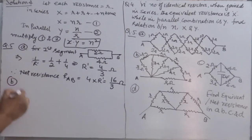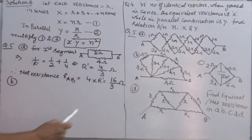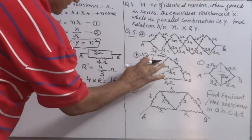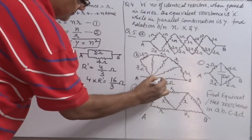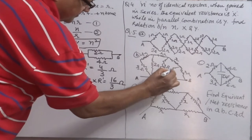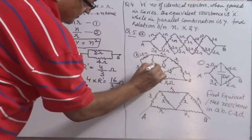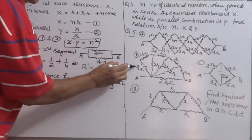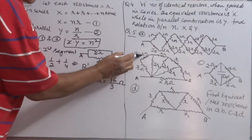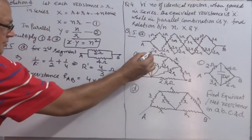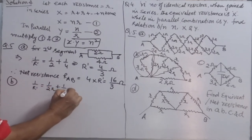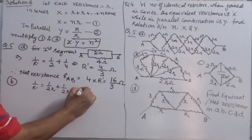Question number five, part B — also a very interesting competitive examination question. We have R, R, and R in series, and that combination is in parallel with R, then again in series and in parallel with R. Each resistance is 2R. For one part: R and R in series gives 2R, then parallel with another 2R. So 1 over R_dash equals 1 over 2R plus 1 over 2R, which implies R_dash equals R.